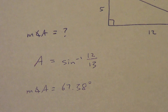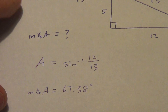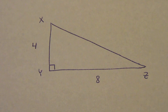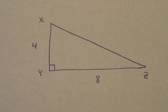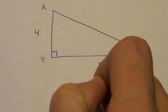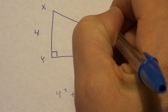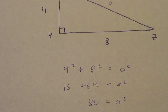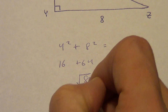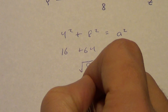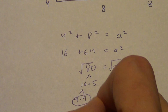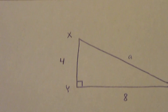That's inverse sine. We can also do inverse cosine or inverse tangent. Now let's look at an example. We have a triangle where I've given you two legs — we're going to solve this triangle, meaning find all missing pieces. First, find the hypotenuse using the Pythagorean theorem: 4 squared plus 8 squared equals a squared. That gives 16 plus 64 equals a squared, so 80 equals a squared. The factor tree gives 16 times 5, and 16 gives a pair of 4s, so a equals 4 root 5 units.